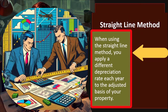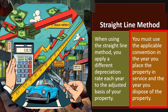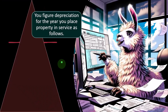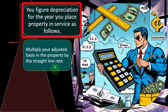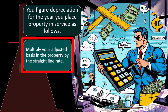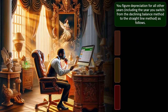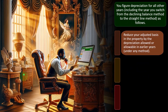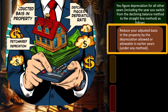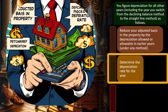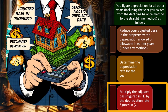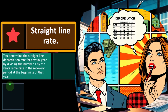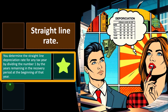Straight-line method: when using the straight-line method, you apply a different depreciation rate each year to the adjusted basis of your property. You must use the applicable convention in the year you place the property in service and the year you dispose of it. To figure depreciation for the year you place the property in service, multiply your adjusted basis in the property by the straight-line rate and apply the applicable convention. For all other years, reduce your adjusted basis by the depreciation allowed or allowable in earlier years, determine the depreciation rate, and multiply.